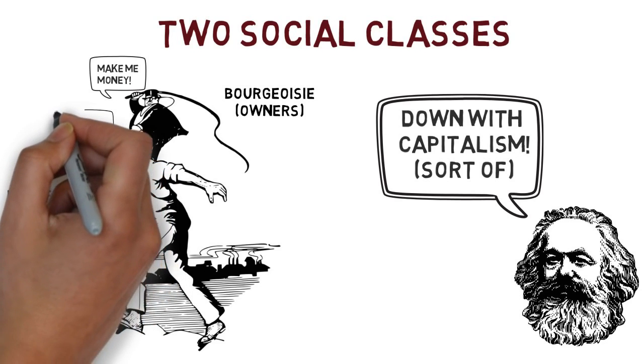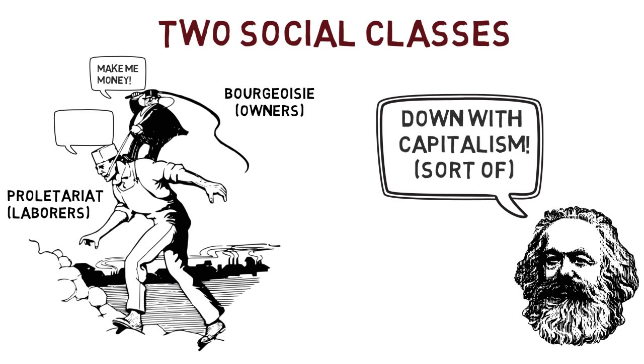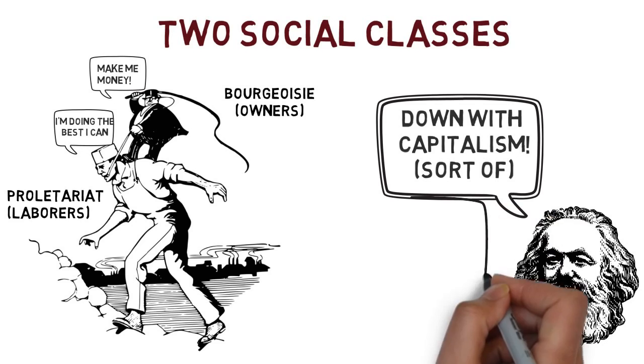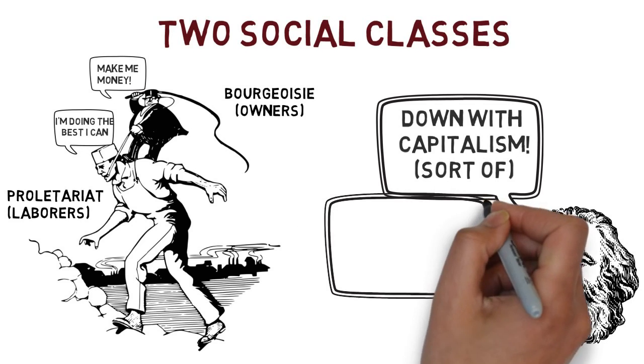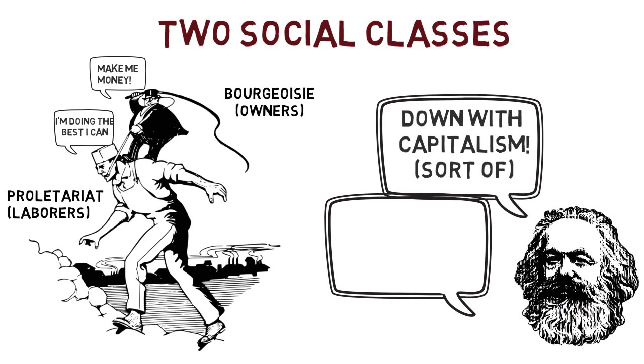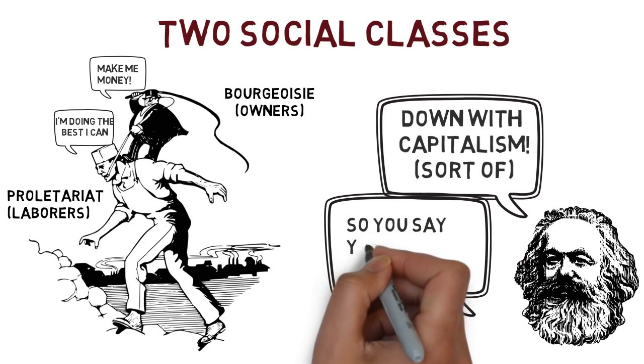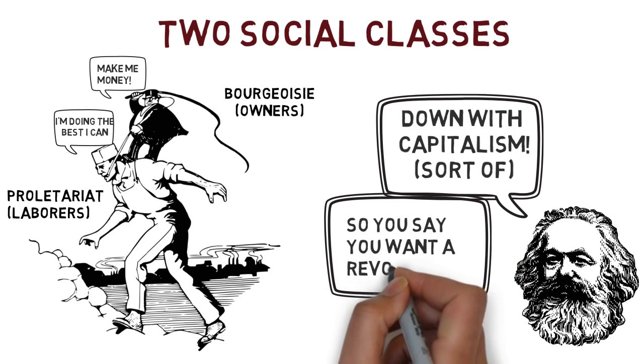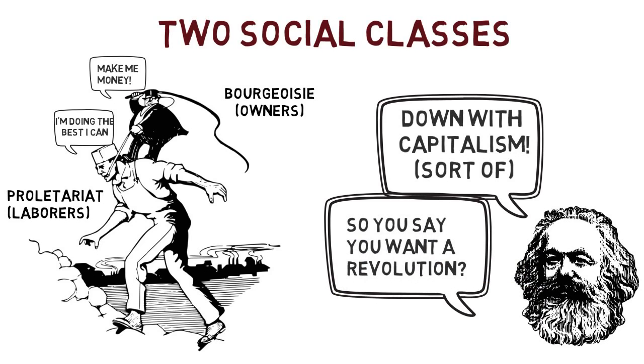Marx was a strong supporter of the proletariat. He believed that the proletariat gained little but lost much in a capitalist system, while the bourgeoisie benefited a great deal. He believed that the proletariat would eventually overthrow the bourgeoisie and a new economic system would be created.